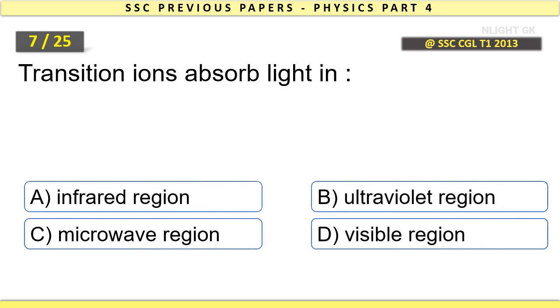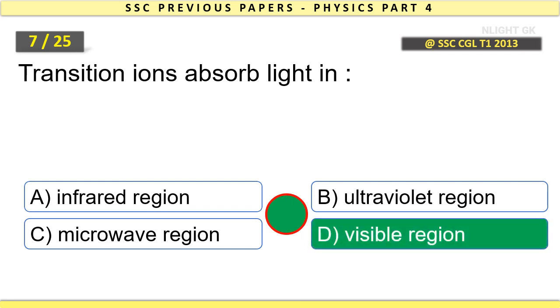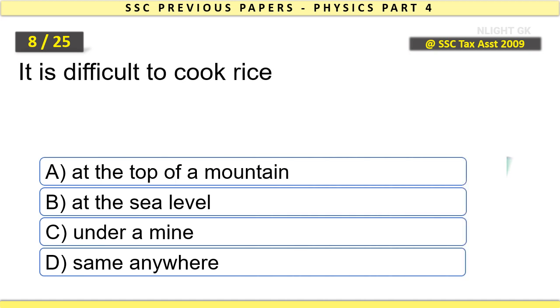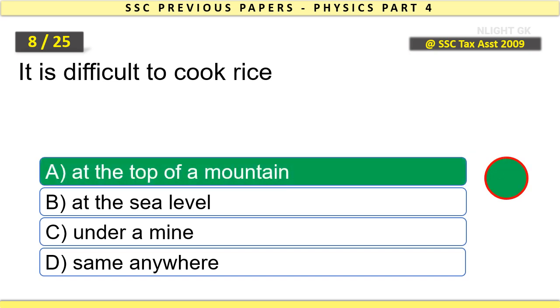Transition ions absorb light in visible region. It is difficult to cook rice at the top of a mountain.